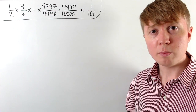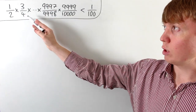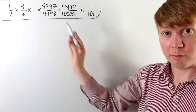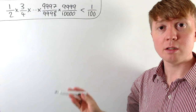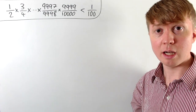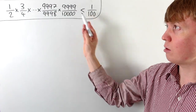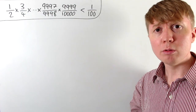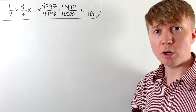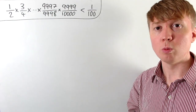We're going to solve this problem where we've got one half times three quarters times five over six, and so on all the way up to 9,999 over 10,000. We want to show that this product is less than one over 100.